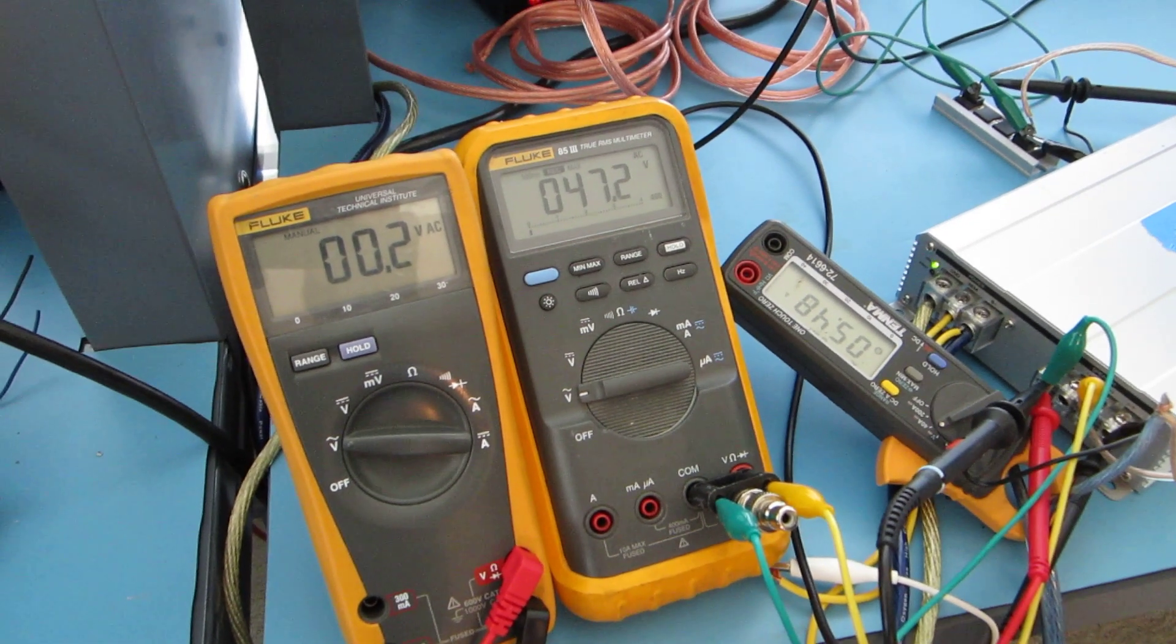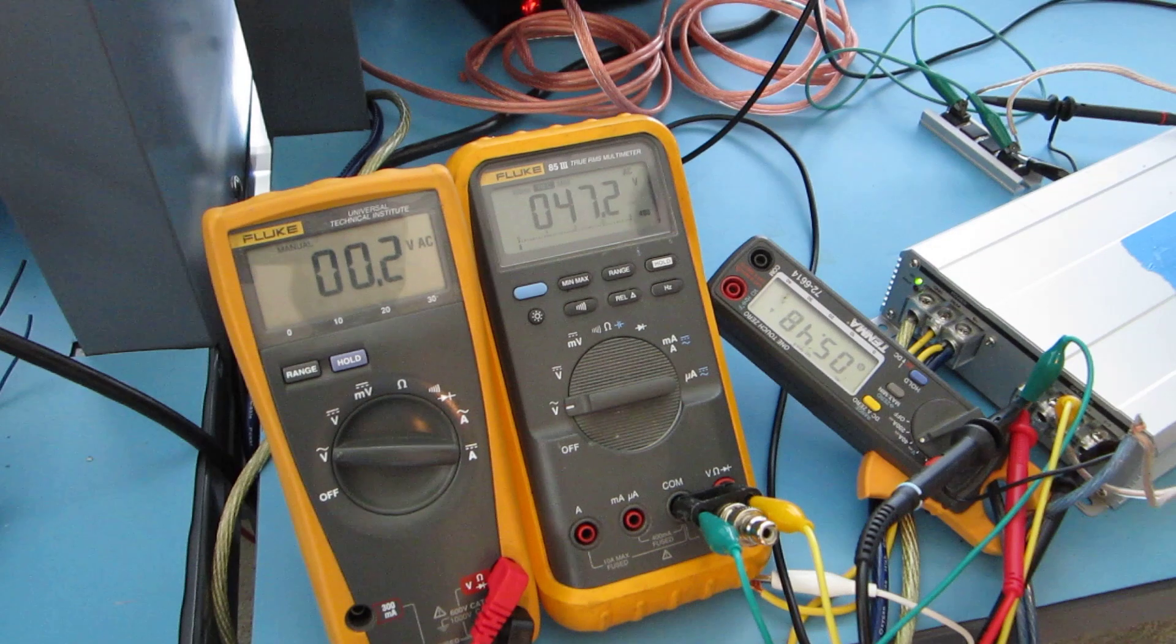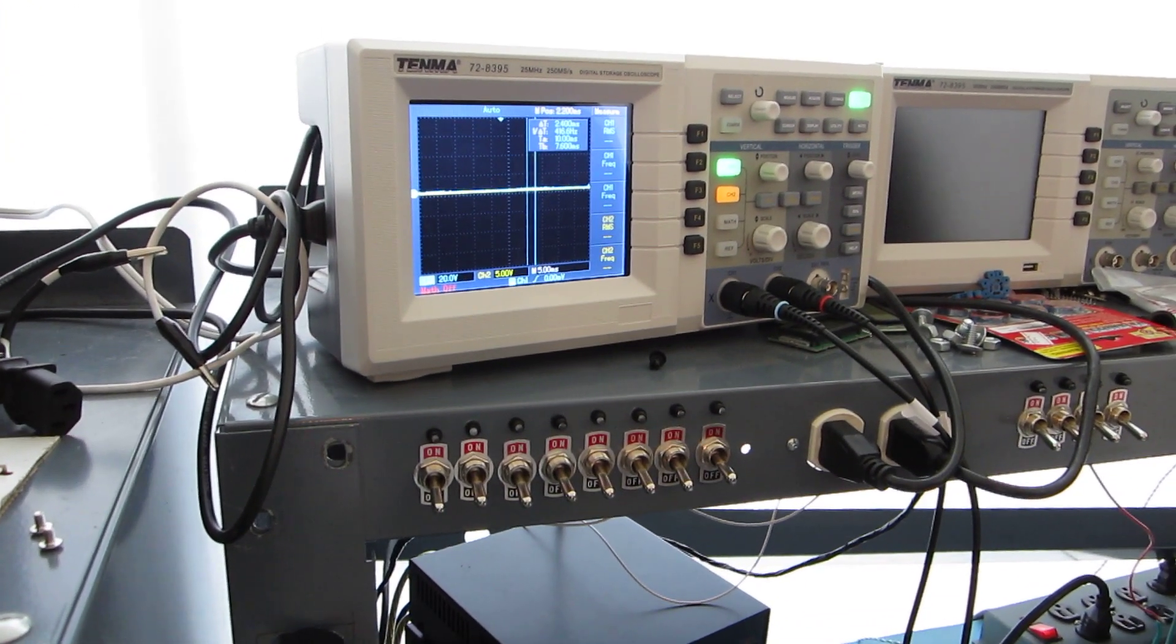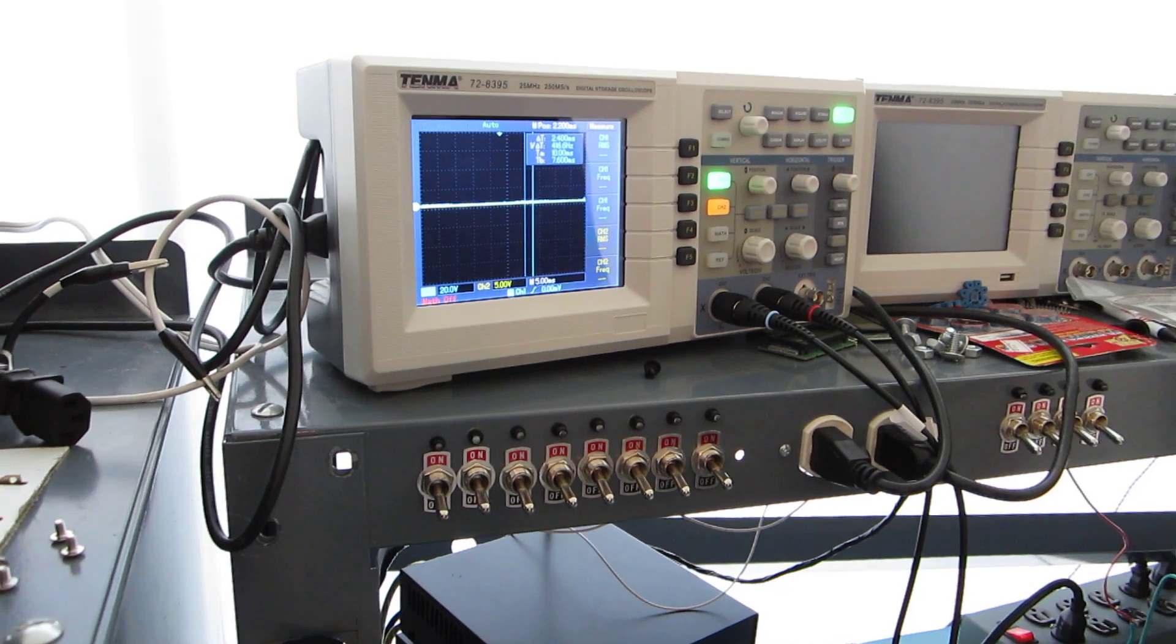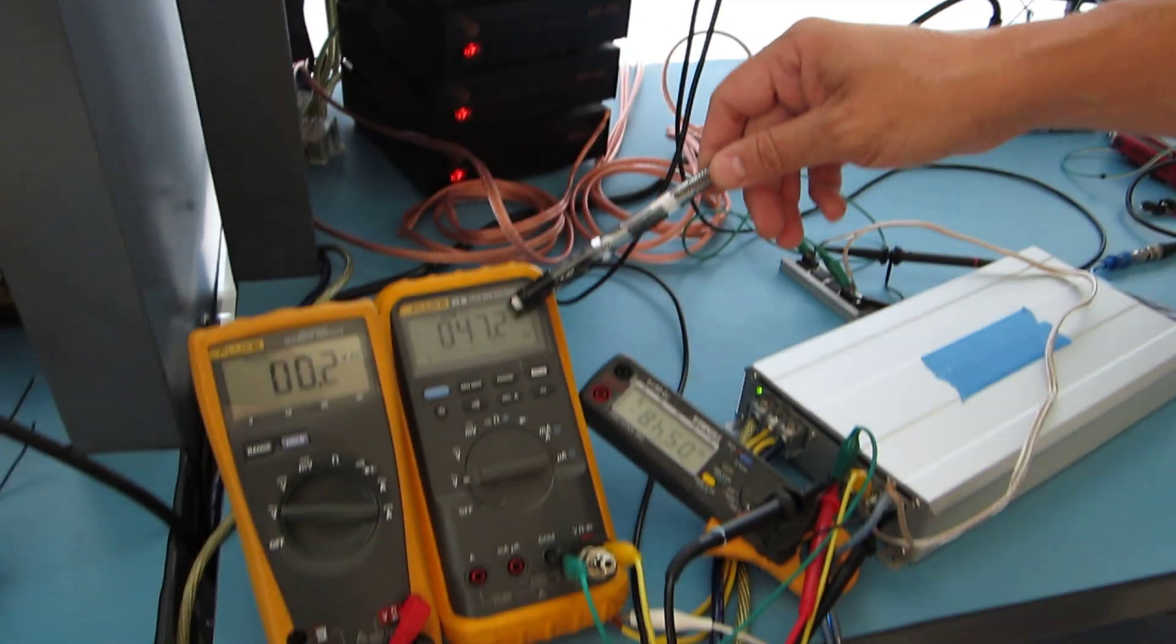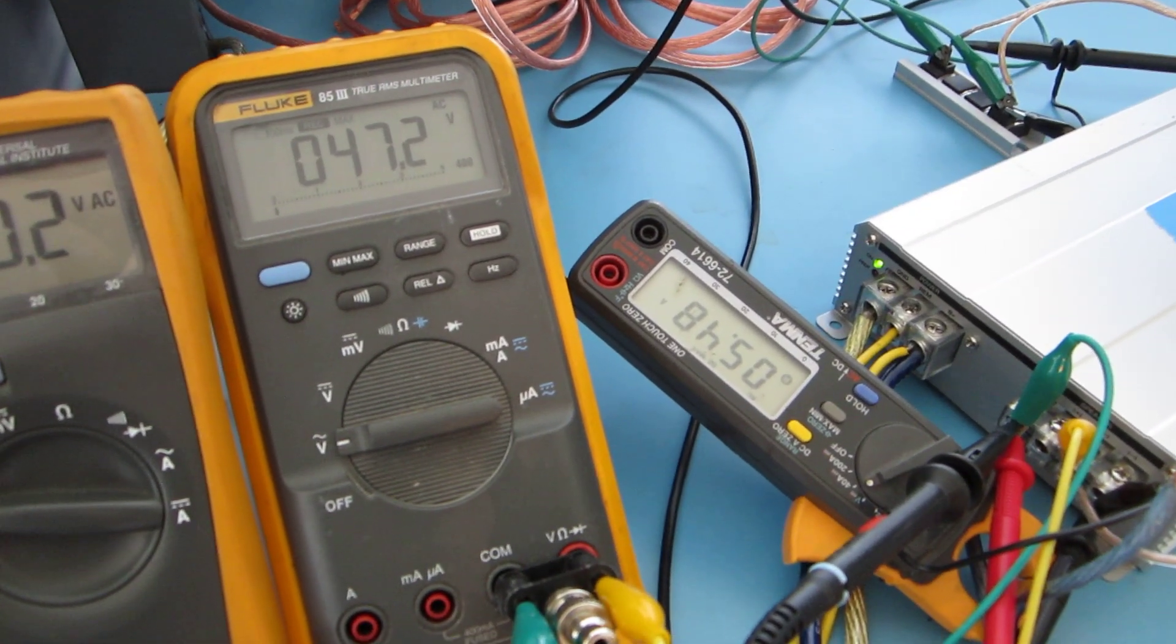Now there's another problem. We have all these measurements but even on this last one here where we're doing it right to the point of clipping we have a phase angle problem to deal with. If we multiply these numbers together that we just got, this times this, it doesn't equal watts. It equals VA.